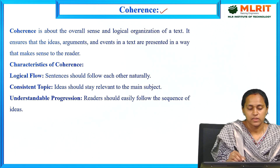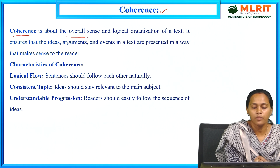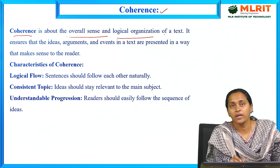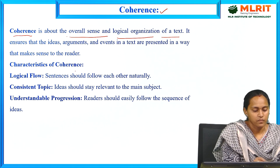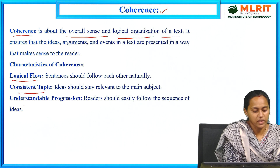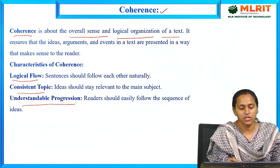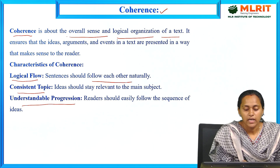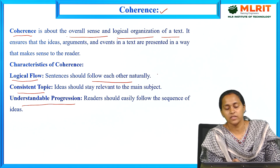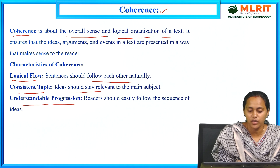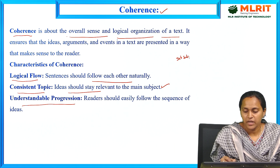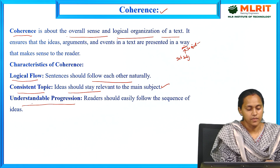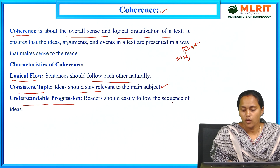Coming to coherence — coherence is all about the overall sense and logical organization of a text, meaning it follows a structural flow. The characteristics of coherence are: logical flow (sentences should follow each other naturally), consistent topic (ideas should stay relevant to the main subject), and understandable progression (readers should easily follow the sequence of ideas).